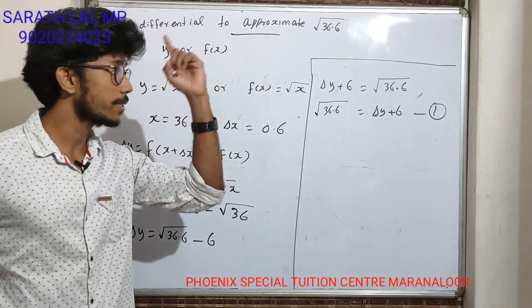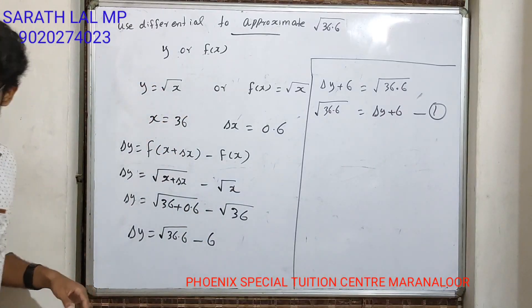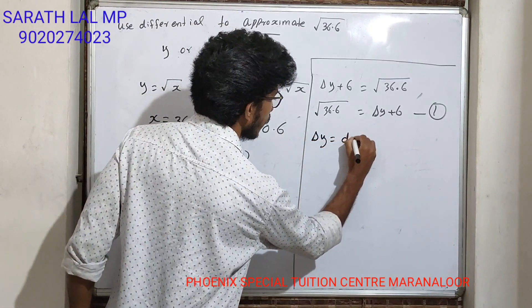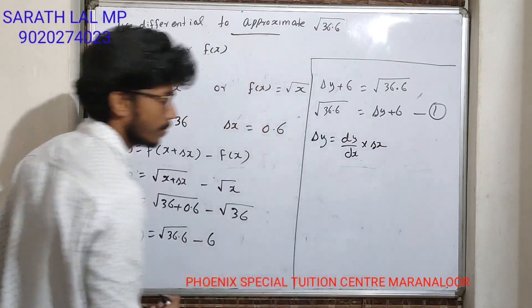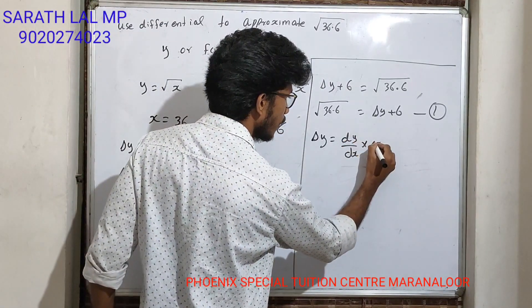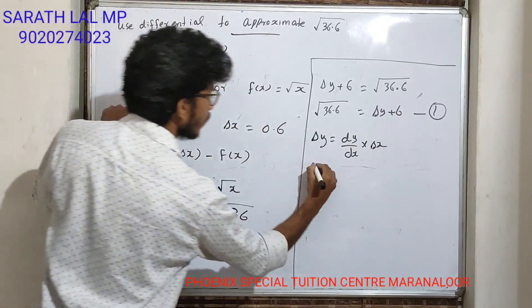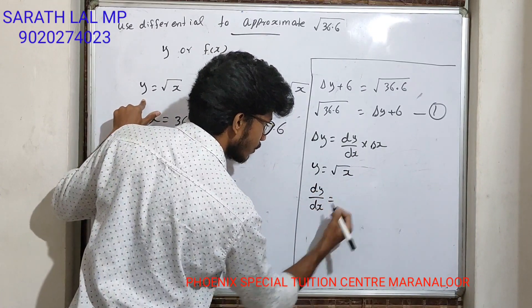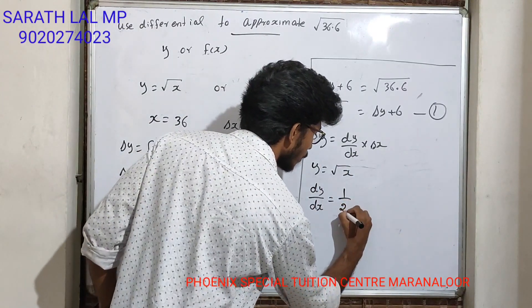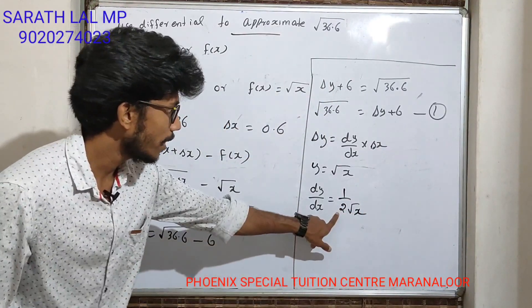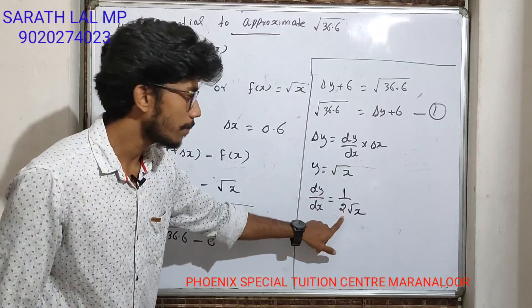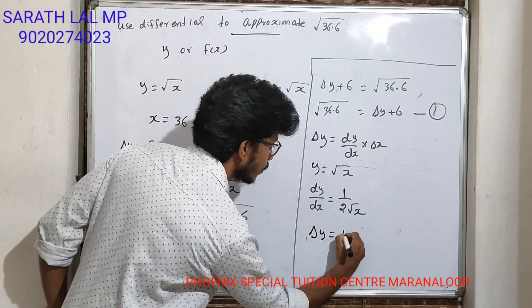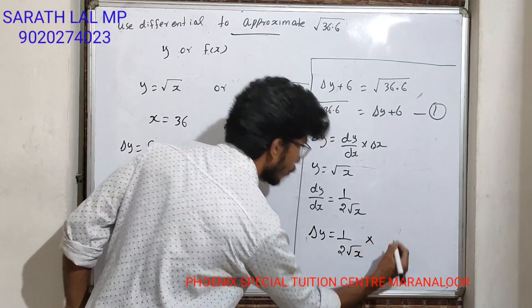Now I will do step 2. Delta y equals dy by dx into delta x. Since y equals root x, dy by dx equals the derivative of root x, which is 1 by 2 root x. Therefore, delta y equals 1 by 2 root x into delta x.